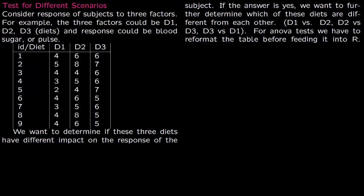We now do an ANOVA test for different scenarios. Consider a table like this — the ID of different subjects where you give them three different factors. In our case, these three factors could be three different diets. For each subject, subject ID 1 has a response of 4 to diet 1, 6 to diet 2, and 6 to diet 3. This response could be blood sugar or pulse.